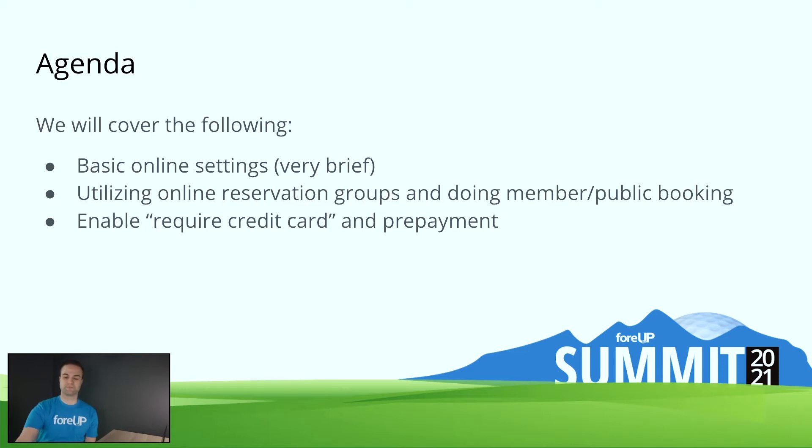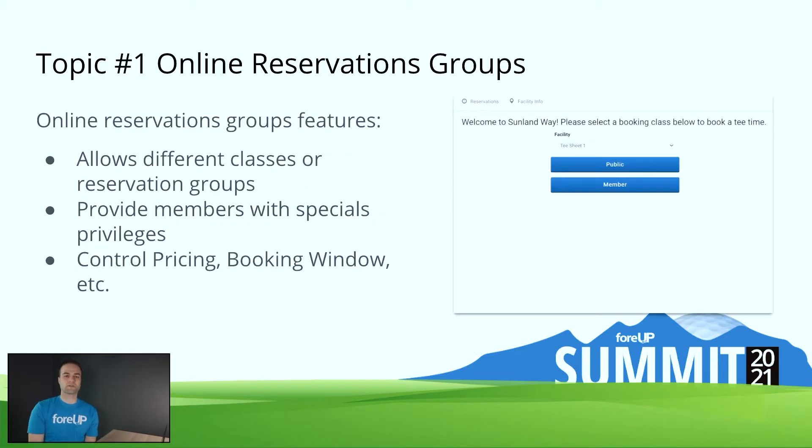Let's talk about online reservation groups. Online reservation groups allow you to classify and group out different segments of your customer database so they can have special pricing and booking windows. You can also password protect those groups to make it so that only members can have access to certain online credentials. This also allows you to split out public versus member bookings.